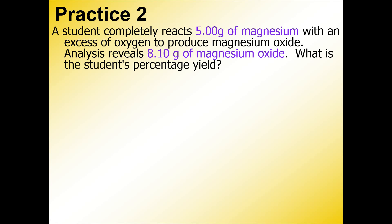In this practice example for percent yields, the question reads: A student completely reacts 5.00 grams of magnesium with an excess of oxygen to produce magnesium oxide. Analysis reveals 8.10 grams of magnesium oxide. What is the student's percentage yield?